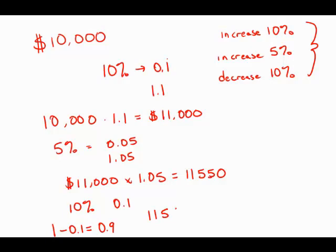And so, 11,550 times 0.9, and after a little bit of multiplication, this comes out to $10,395. This is the amount that she has in her account at the end of the third year, and this is answer choice B.